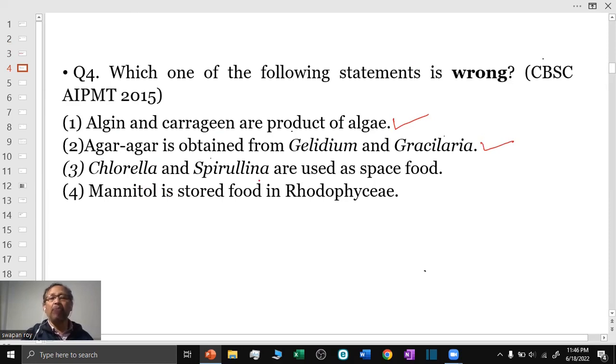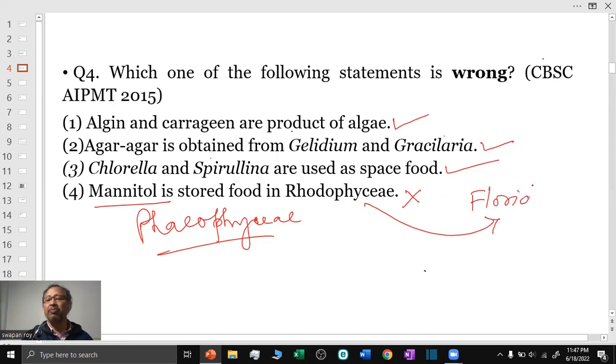This is correct. Chlorella and Spirulina are used as space food. Correct. Mannitol is stored food in Rhodophyceae. This is wrong because mannitol is the stored food of Phaeophyceae. The wrong statement is option number 4.